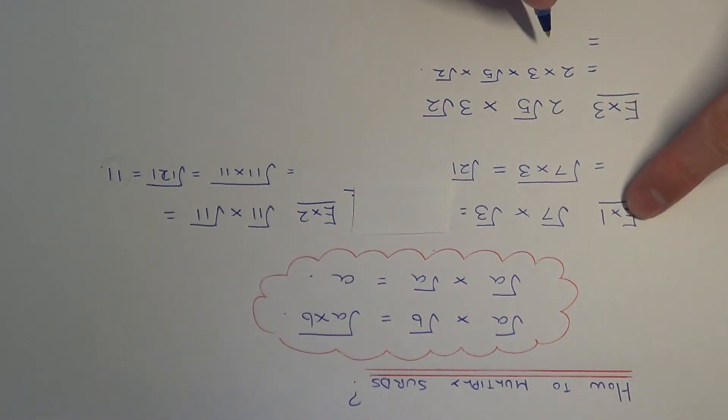We can work out two times three, which is six, and then multiply our surds together using the first rule, so that's five times two. Five times two is ten, so our final answer is six root ten.